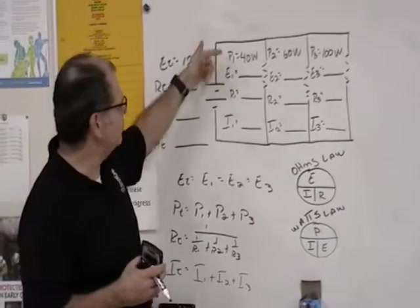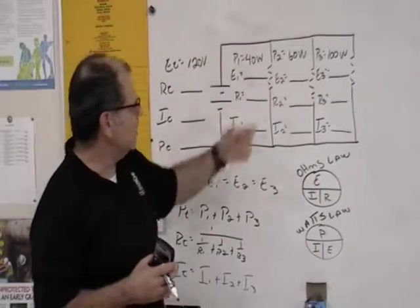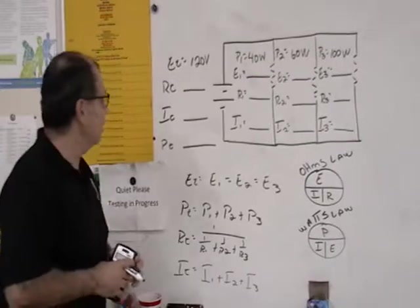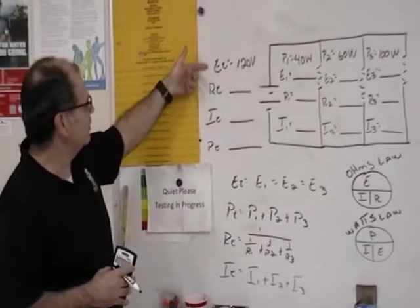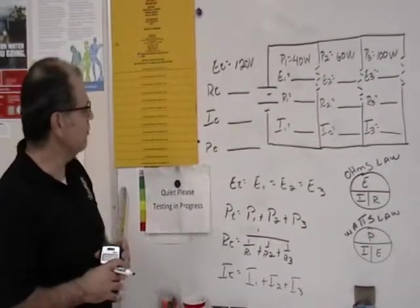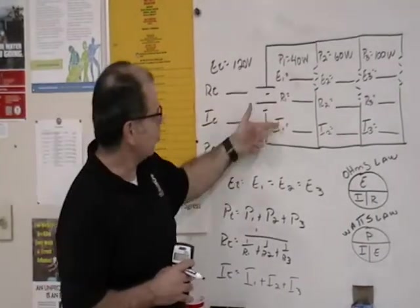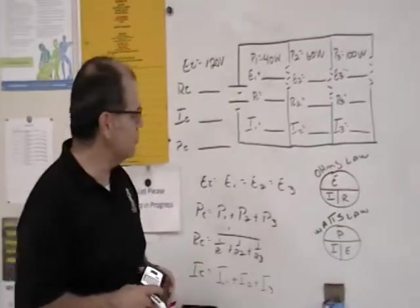P1 is 40 watts, P2 is 60 watts, and P3 is 100 watts. And we also have the total voltage at the source of 120 volts. So we're going to be solving for all of these unknown values across each one of these resistors.